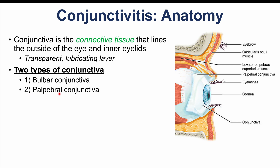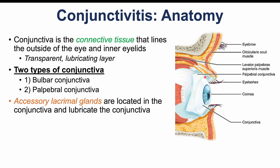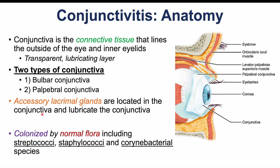The palpebral conjunctiva lines the inside of the eyelid. There are also accessory lacrimal glands, or accessory tear glands, located in the conjunctiva that help lubricate it. The conjunctiva and other parts of the eye surface are colonized by normal flora, including species of streptococci, staphylococci, and corynebacteria. This layer of normal flora can help reduce infection by other pathogenic organisms.